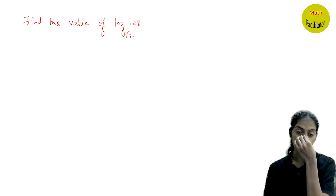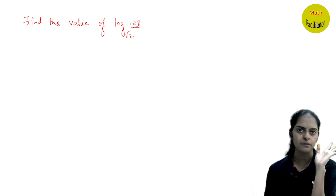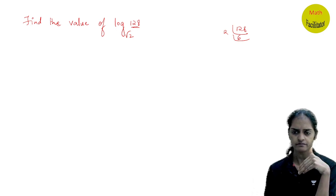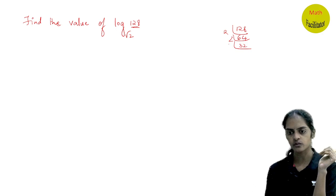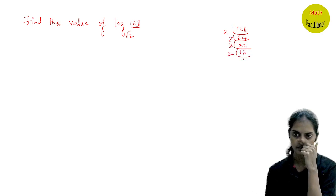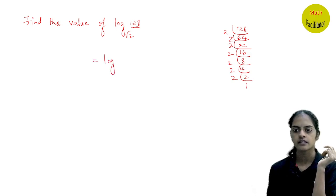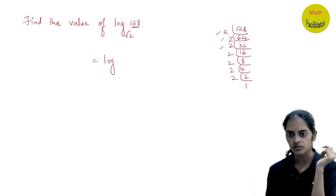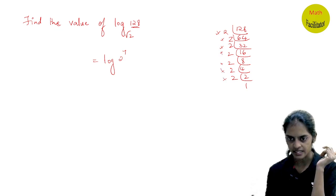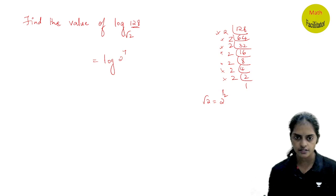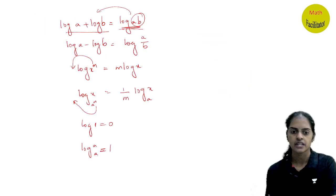Next: find the value of this log. I found a big number, so the first step — whenever you find a big number, prime factorize. 128 is 2, 2, 6s are 12, 2 fours are 8, and so on — 128 is 2 power 7. And root 2 I can write as 2 power 1 by 2. Now using our two formulas: when power is in the argument you get m log x; when power is in the base you get 1 by m. So here you get 7 log 2 to the base 2 power 1 by 2. The base power reciprocals: 1 by 2 becomes 2 by 1, giving 7 times 2 times log 2 to the base 2, which is 1. So the answer is 14.